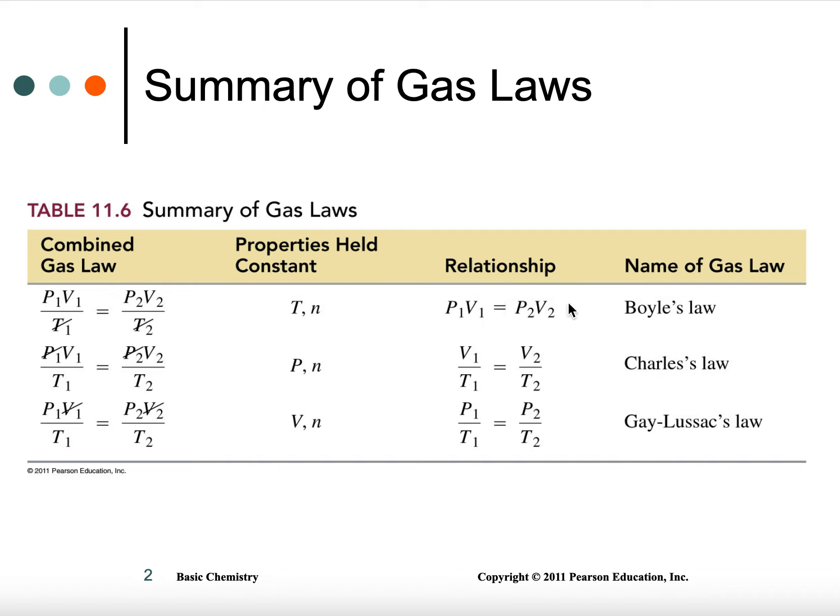That means pressure and temperature are direct, volume and temperature are direct, pressure and volume are inverse. So one goes up as the other goes down. Direct means they go up together, they go down together.